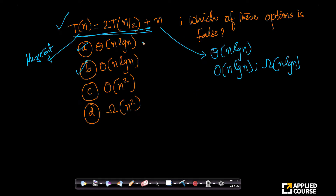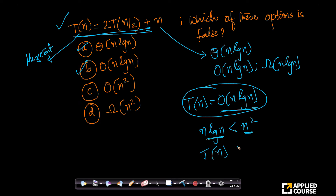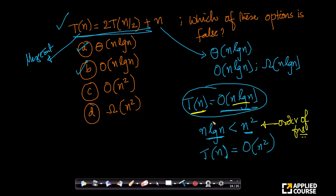Now, for this recurrence relation T(n), we know T(n) is Big O of n log n. From the order of functions, we know that n log n grows slower than n squared. So, if T(n) grows slower than n log n, and n log n grows slower than n squared, then T(n) must also be growing slower than n squared — which means T(n) is Big O of n squared. So that option is also correct.